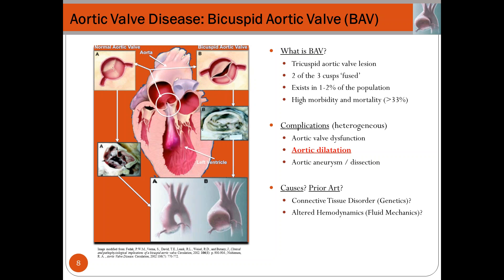What causes this alteration? Some groups believe it is a connective tissue disorder related to the genetics of the patient. Others believe it is related to alterations of hemodynamics in the thoracic aorta. Personally, I consider a combination of both — genetics and hemodynamics interact and share in different factors leading to this disease. For the focus of this talk, we will address the hemodynamic part.